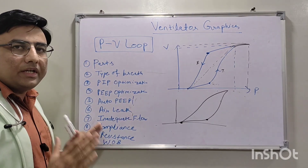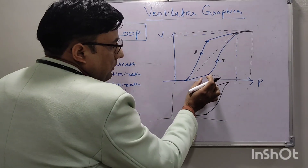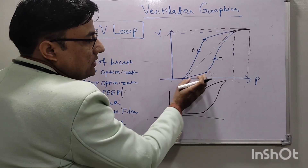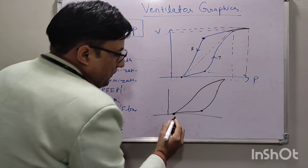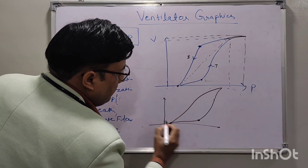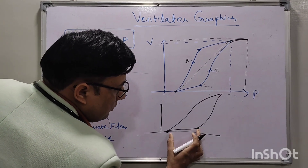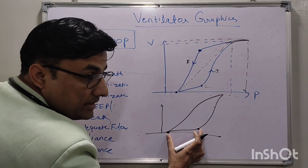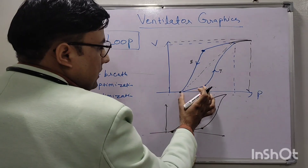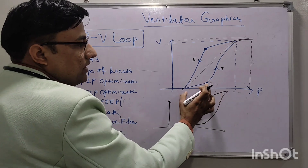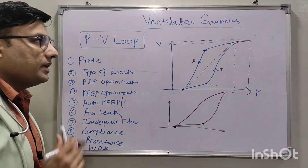We can also optimize the PEEP using this graphic. The optimum PEEP is one where the lower inflection point is as close as possible to the PEEP point. If we see a large gap — meaning pressure is increasing with no increase in volume before compliance improves — we need to increase the PEEP so that FRC increases and compliance improves, bringing the lower inflection point closer to the PEEP point.